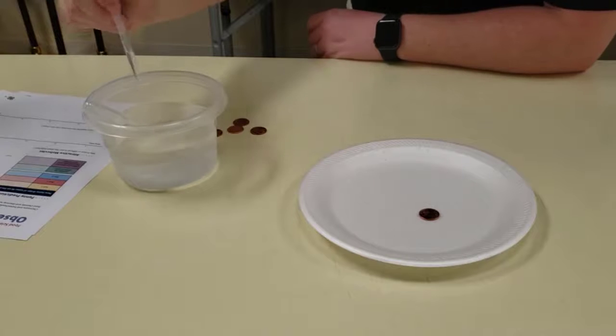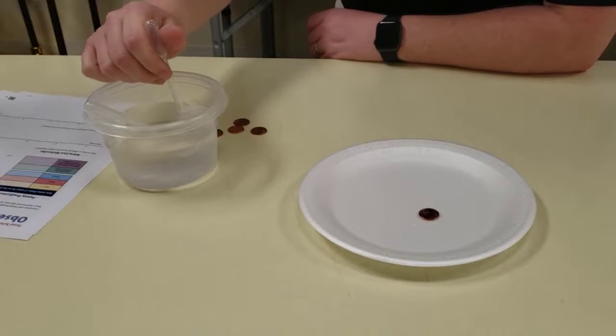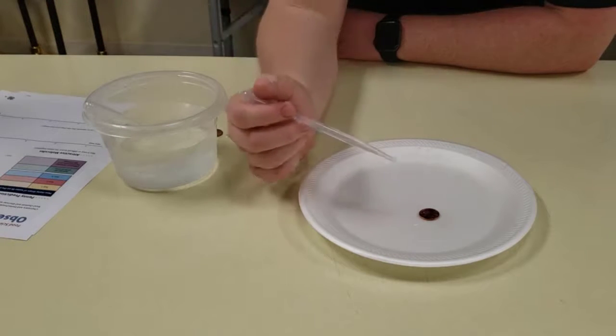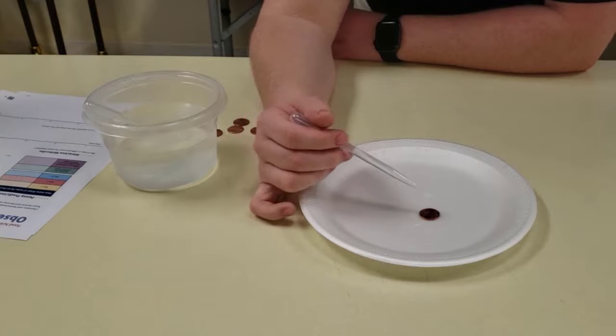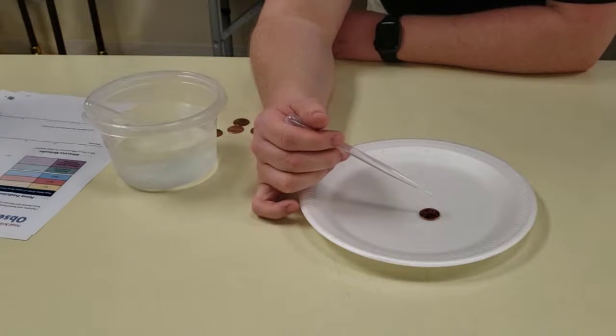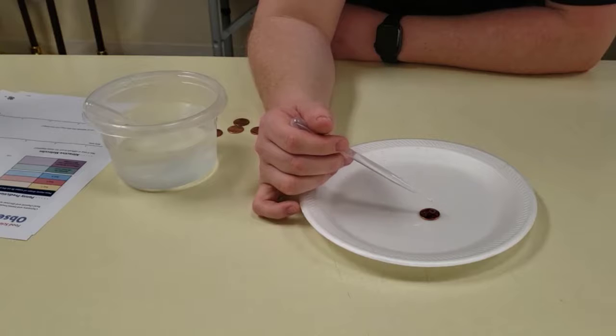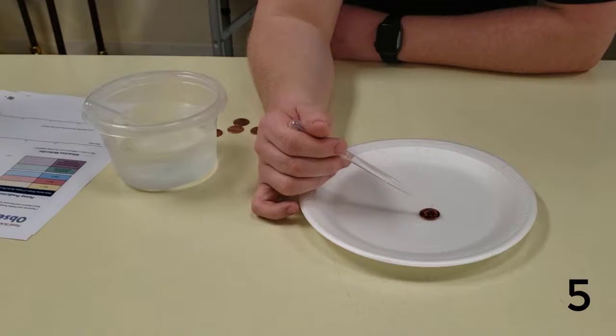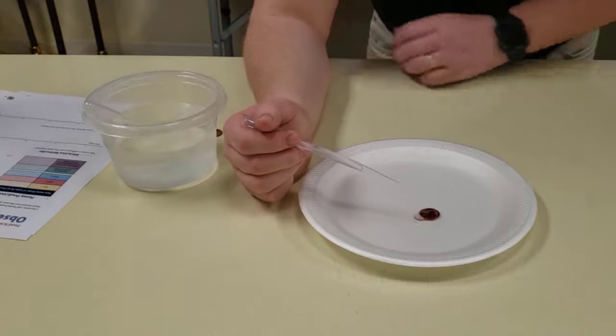So all I'm gonna do is I'm going to take my water and suck it up into the eyedropper, and then I'm gonna place it over the top of the penny and I'm just gonna count how many droplets of water that I'm gonna put onto this penny. So we have 1, 2, 3, 4, 5, 6, 7, 8, 9, 10, 11, and you can see that the water started to spill over.